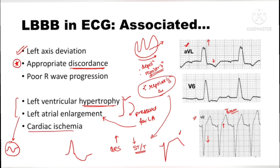This brings us to an important consideration: cardiac ischemia manifests as ST elevations or depressions, T wave inversions, or prominence. Since secondary depolarization abnormalities in LBBB can produce ST elevations and depressions, it makes it difficult to diagnose cardiac ischemia in the presence of left bundle branch block. There are specific techniques and a different approach to diagnose cardiac ischemia in this setting, which I have covered separately and will make a dedicated video on.